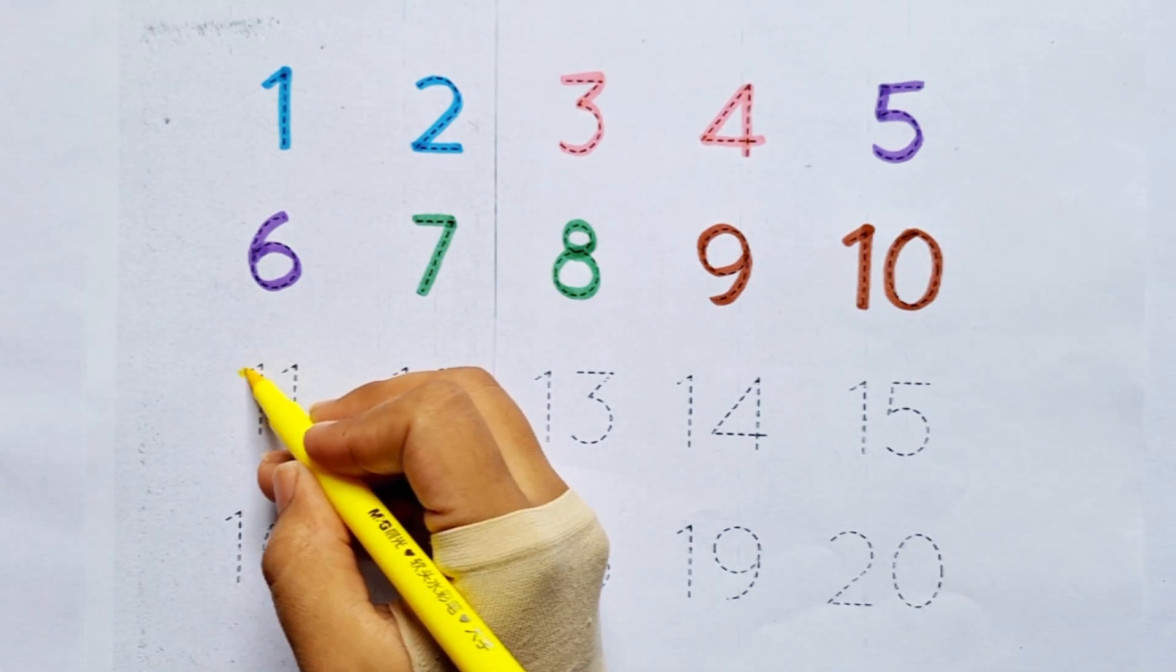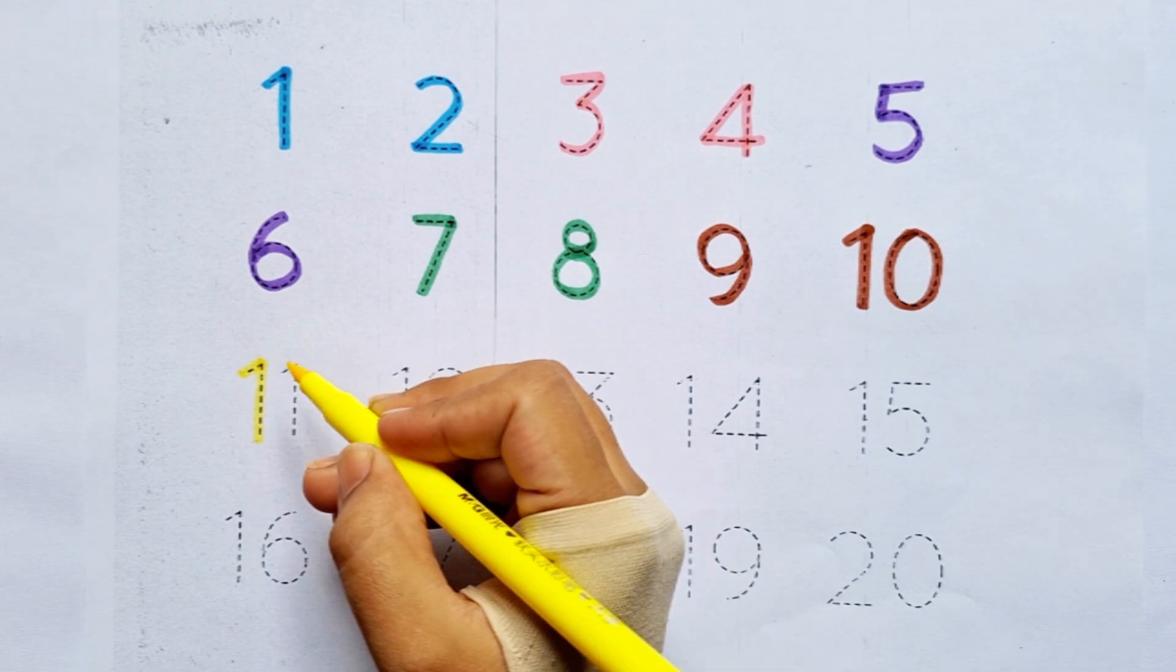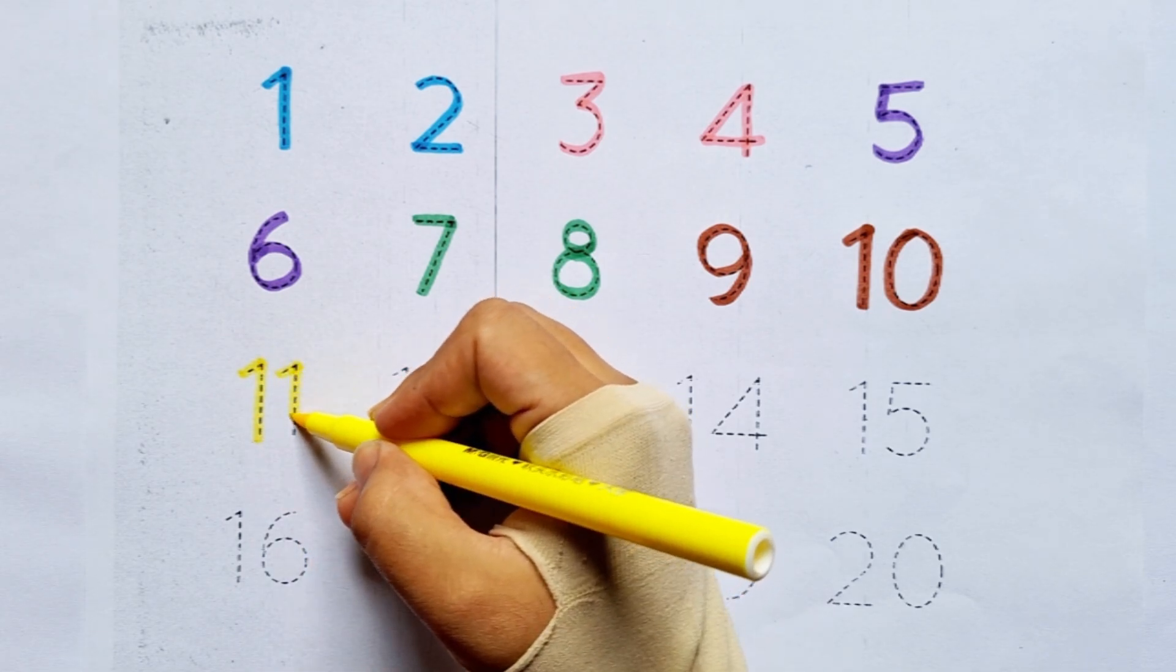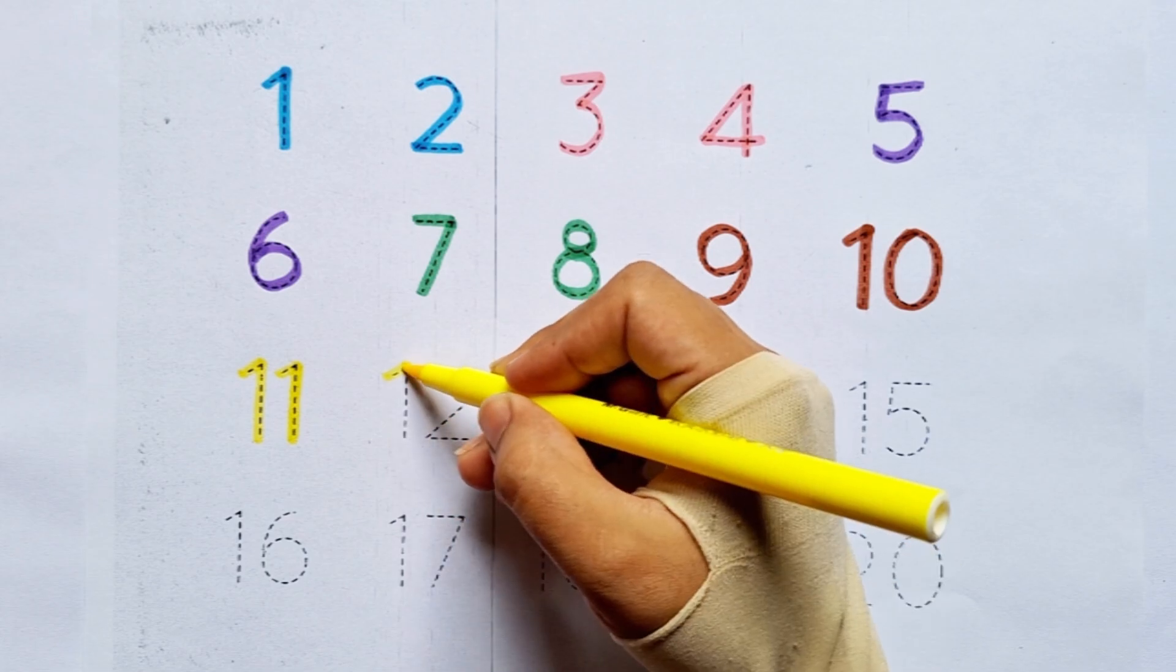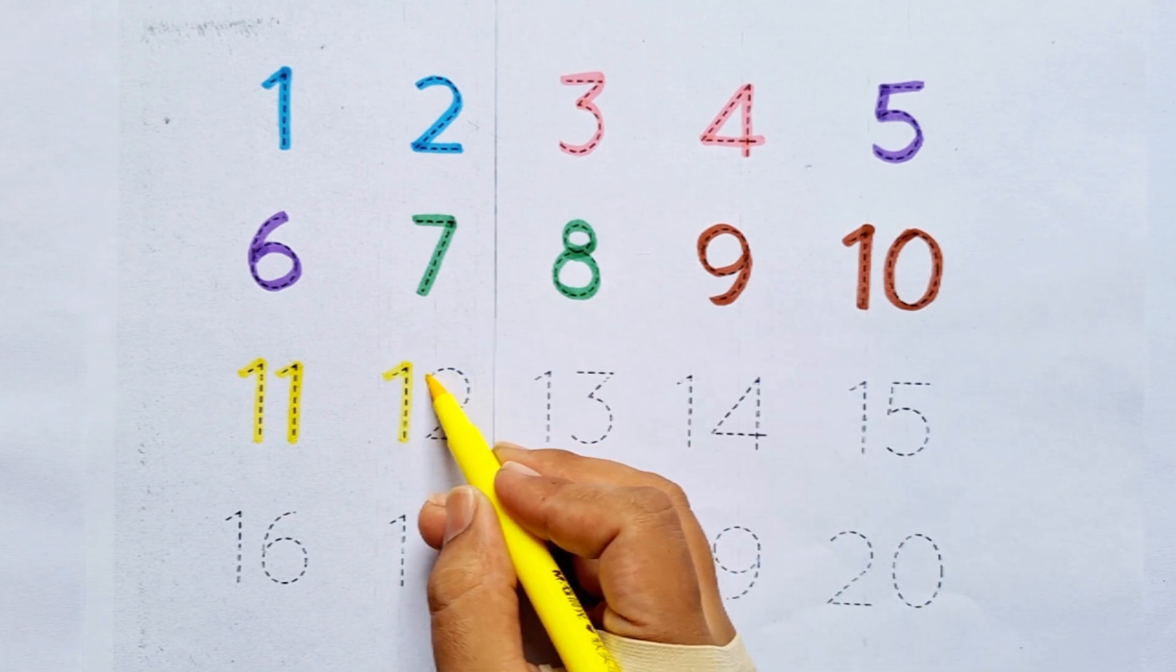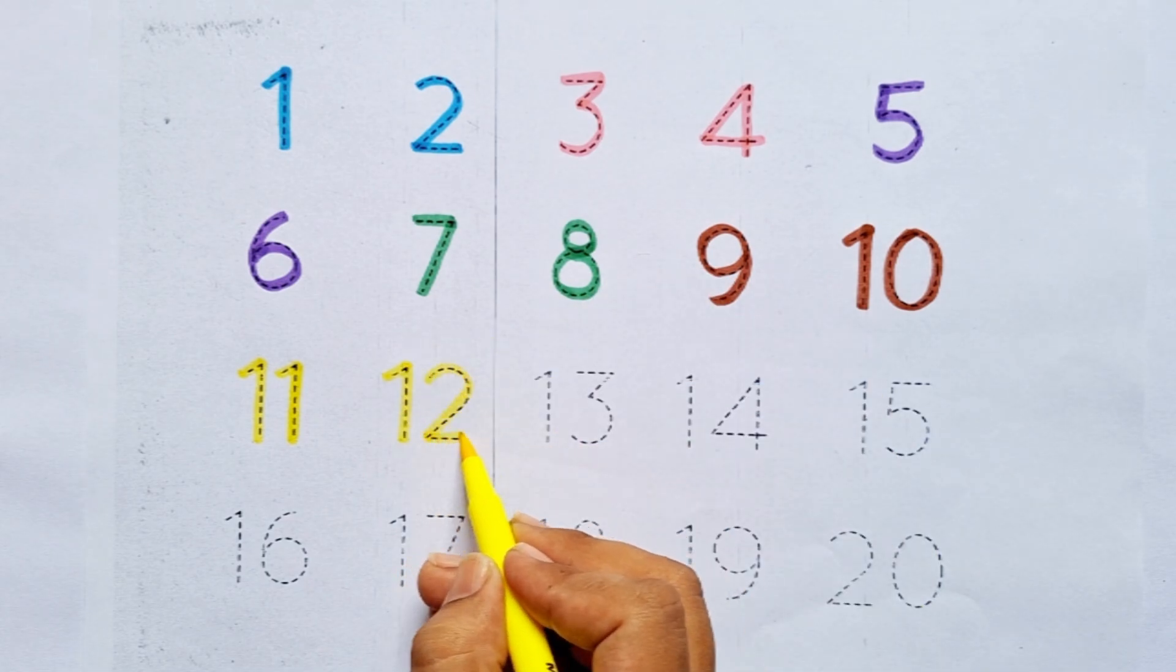Eleven: one, one. Eleven. After ten comes eleven. Twelve: one, two. Twelve. After eleven comes twelve.